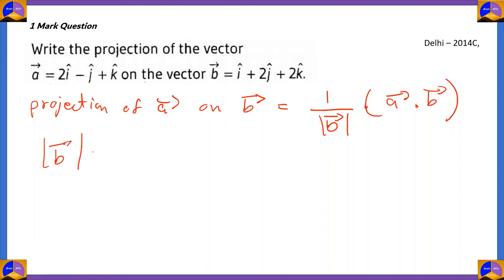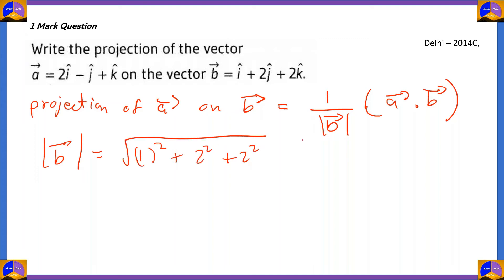Modulus of vector b is the square root of the sum of the squares of the components of vector b. So √(1² + 2² + 2²) = √(1 + 4 + 4) = √9 = 3.